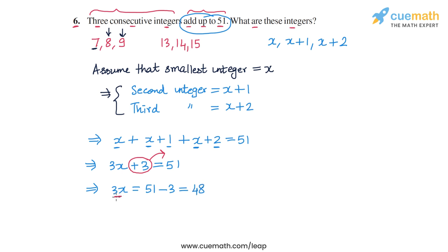And now we have this three x here. So we need to get rid of this three. So let's divide both sides of the equation by three. So we will get x on the left side. And on the right side, we have this 48. So 48 by three, that is equal to 16. So we get x is equal to 16.